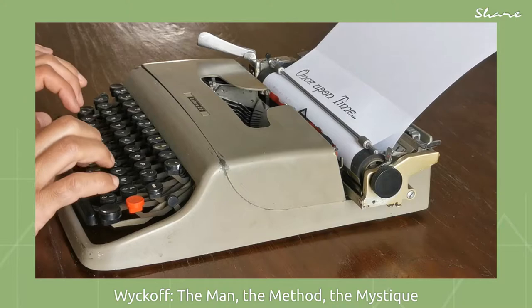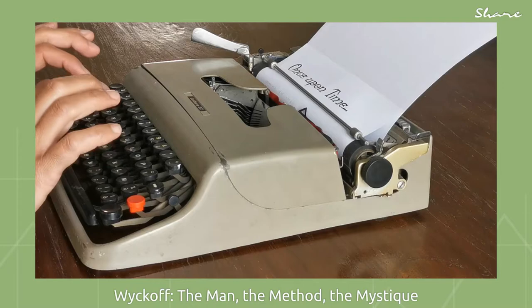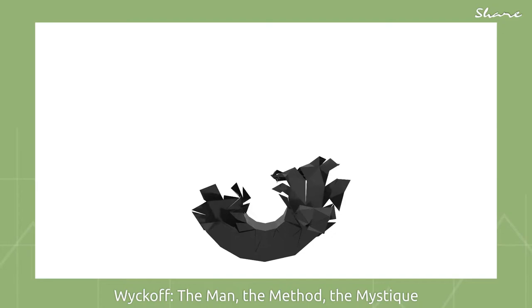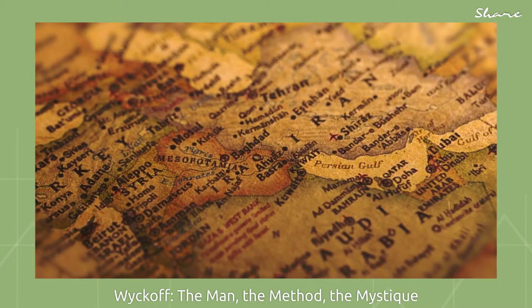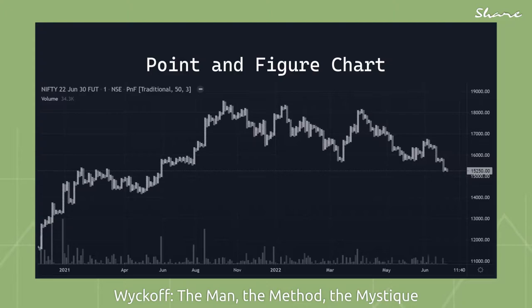About Wyckoff's method: it is a five-step method of market analysis, which is the heart of this book and explained in detail in chapter 7. Step 1: Determine the present position and probable future trend of the market, then decide how you are going to play the game. Use bar charts and point and figure charts of market indices.